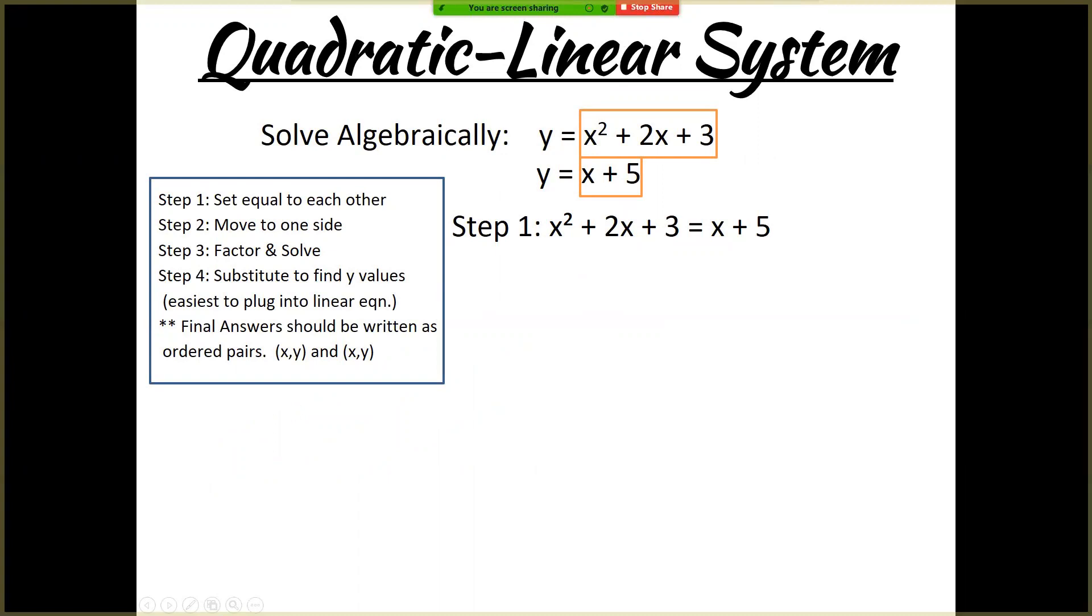The first thing you want to do is make sure your equations are both y equals whatever they are. The majority of the time, they will be given to you that way. So if y equals both of those things, then both of those things have to equal each other. So that first step we're going to do is set these two boxes equal to each other. The order doesn't matter. I normally put the x squared on the left, just out of habit. So step one is going to be to set them equal to each other because they both equal y.